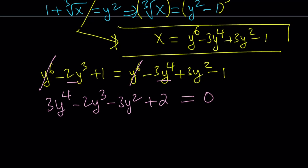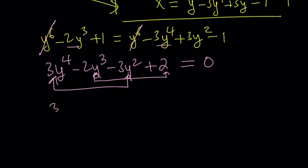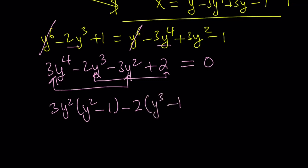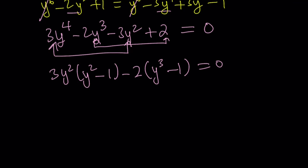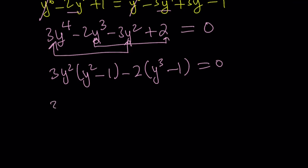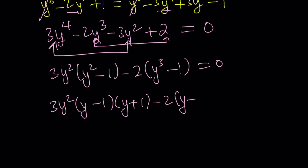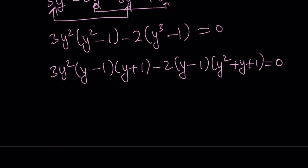There is a good reason why y equals 1 is a solution. If you group these terms and factor, you can take out 3y squared to get y squared minus 1, and from the other two terms take out negative 2 to get y cubed minus 1. Notice that both y squared minus 1 and y cubed minus 1 have y minus 1 as a factor. So let's break it down further: y minus 1 times y plus 1 from difference of two squares, and difference of two cubes. So y minus 1 is a common factor — let's take it out.